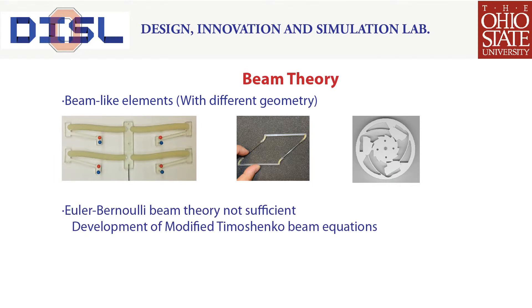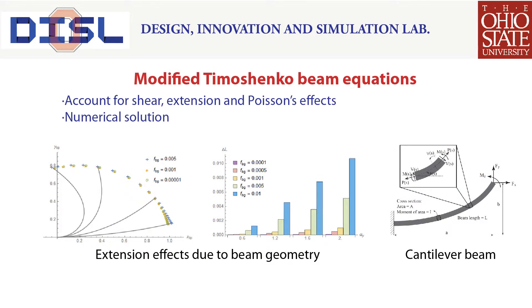We have developed a modified set of equations for Timoshenko's beam theory, incorporating extension and Poisson's effects in addition to shear effects. A cantilever beam undergoing bending, shear, and extension is shown in the figure on the right. The beam equations were made dimensionless to facilitate scaling for different applications. The two graphs show the change in extension in the beam as the beam geometry is varied from thin beams to thick beams.